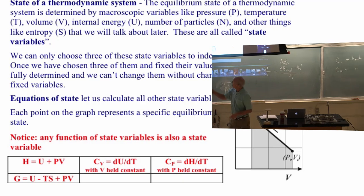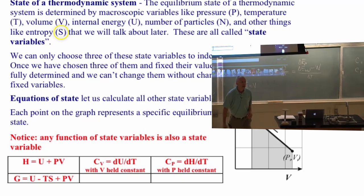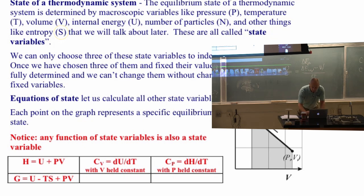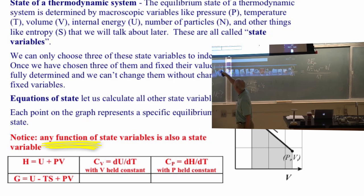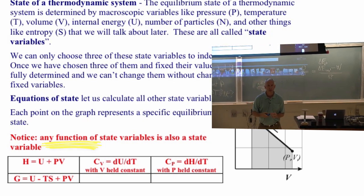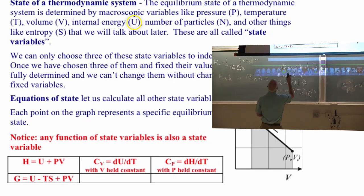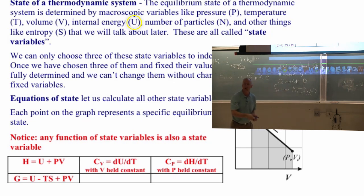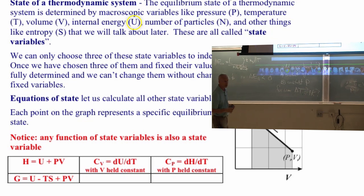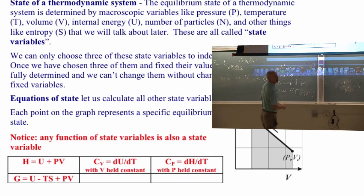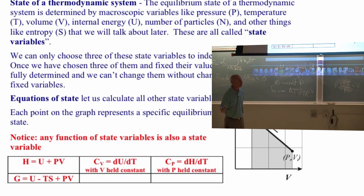So there are two equations of state giving you additional state variables. I'll now name another one: entropy. If I know those three variables for an ideal gas, I can calculate its entropy. In fact, any function of state variables is itself a state variable. You can take state variables and add, subtract, multiply, divide, or take derivatives of them and you end up with another state variable.